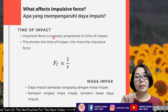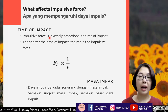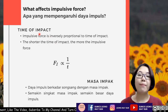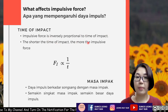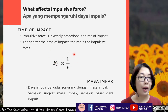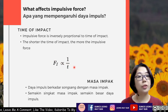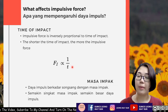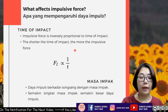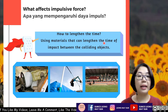The second factor is time of impact — also called collision time or time of interaction. Impulsive force is inversely proportional to the time of impact, as seen in the formula F = (mv − mu) / t. The shorter the time of impact, the greater the impulsive force.